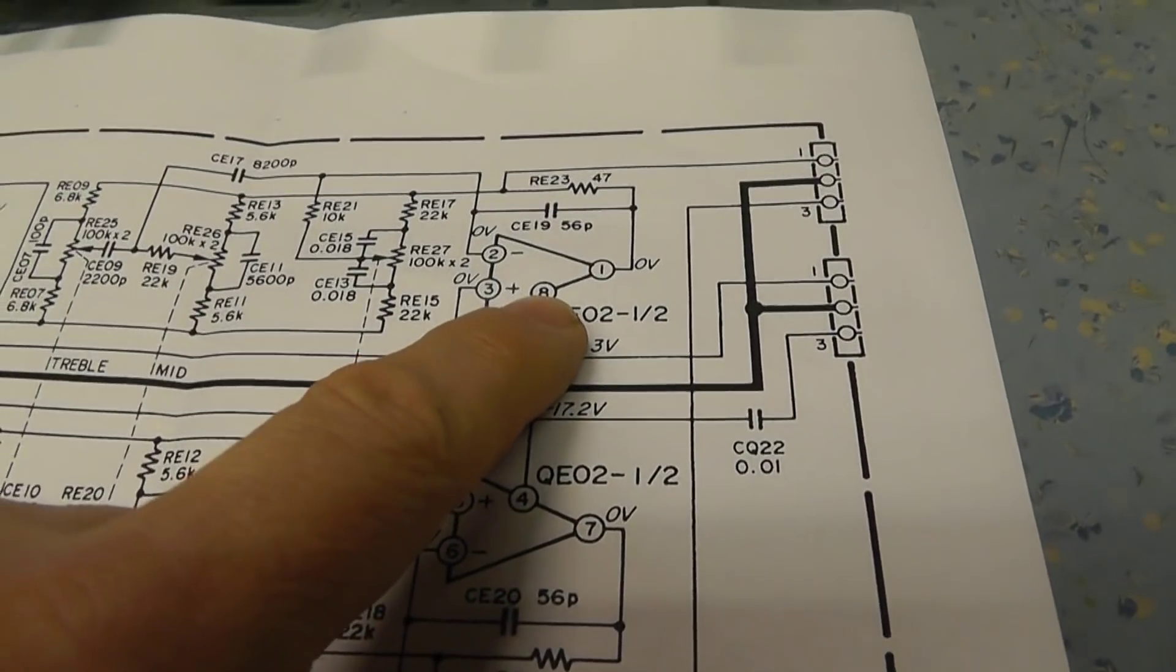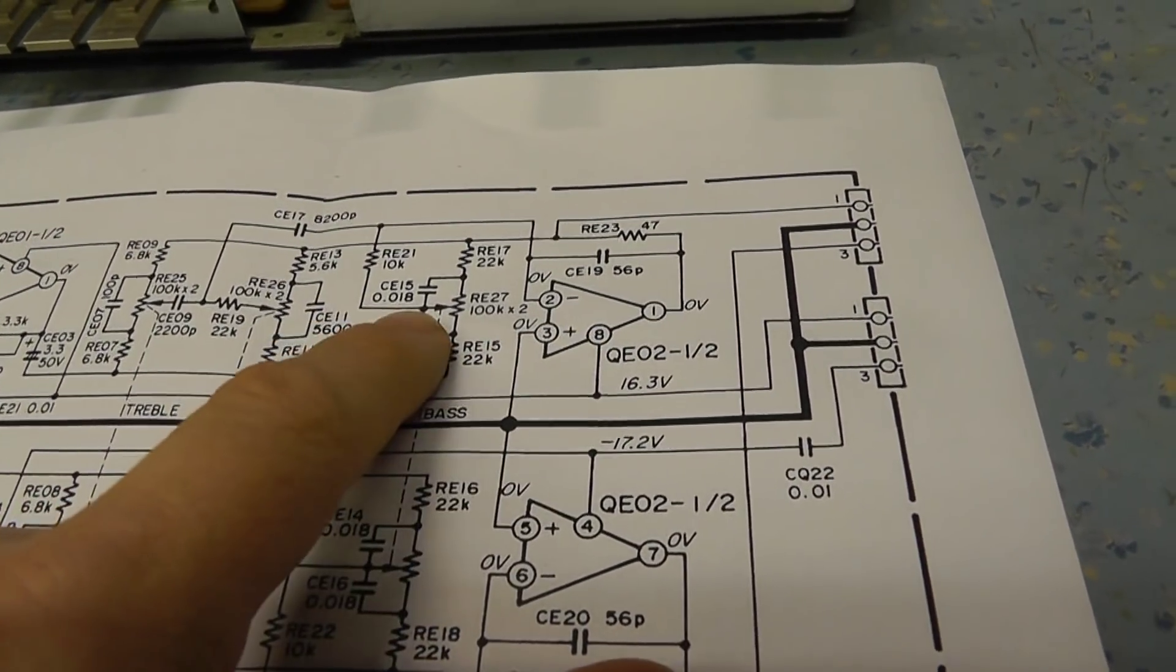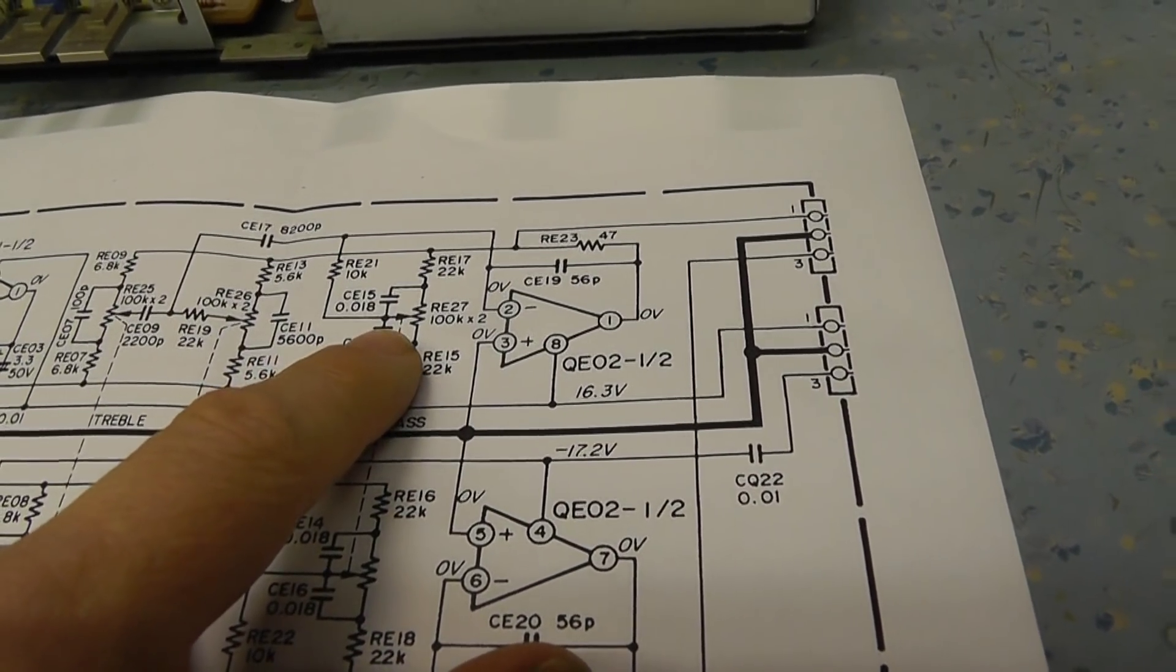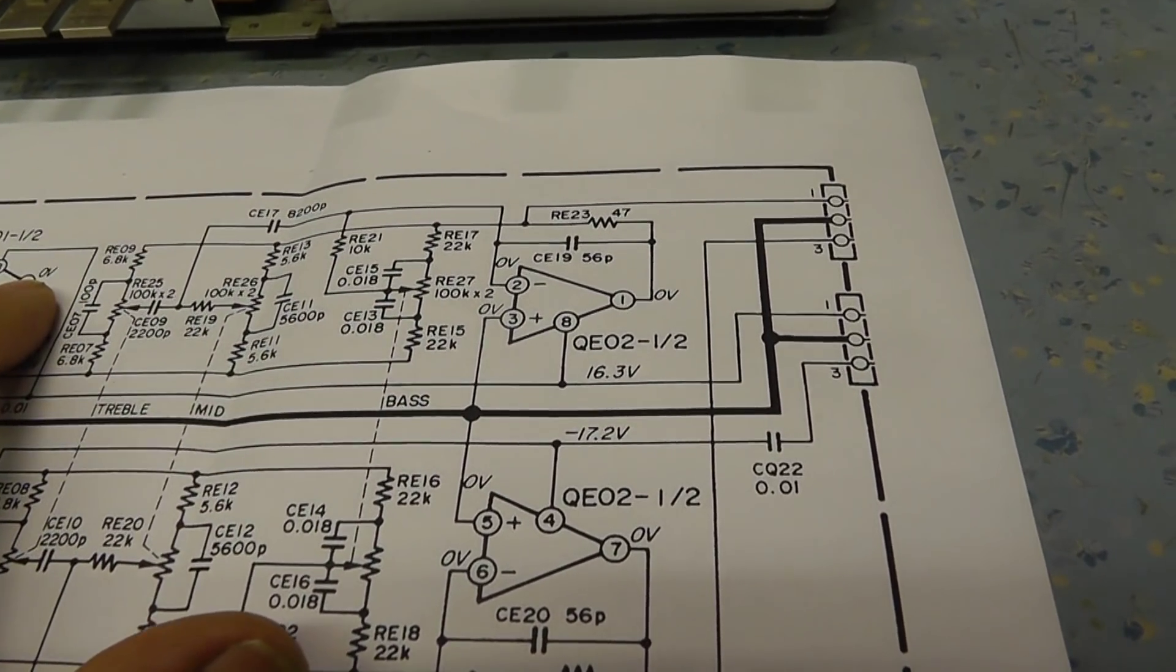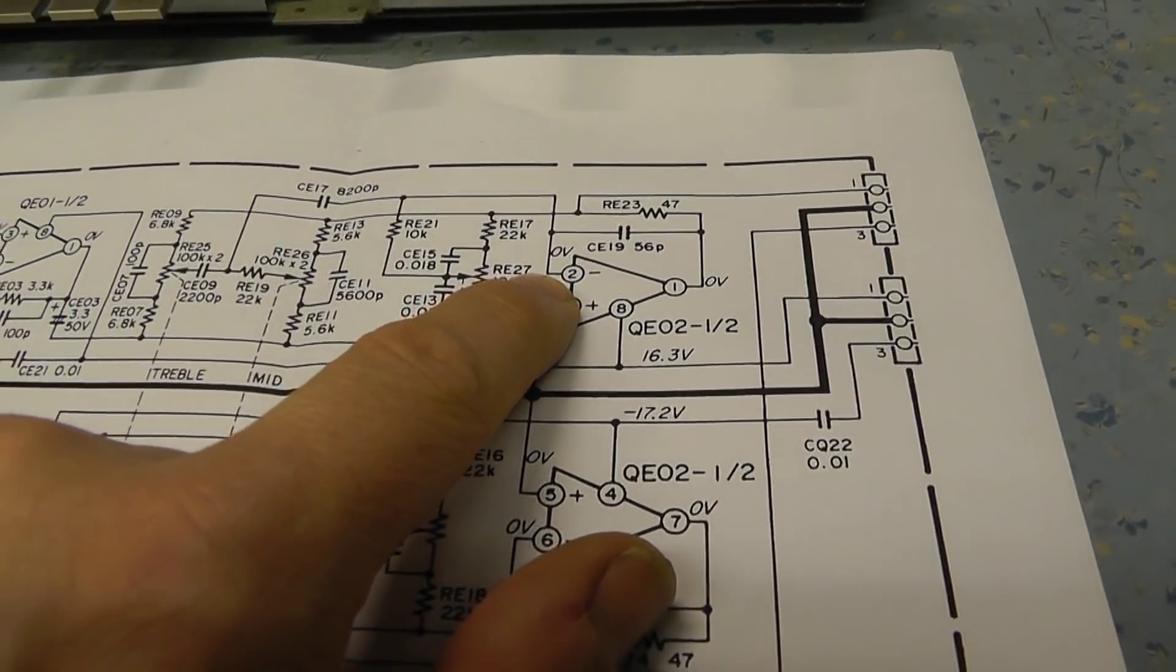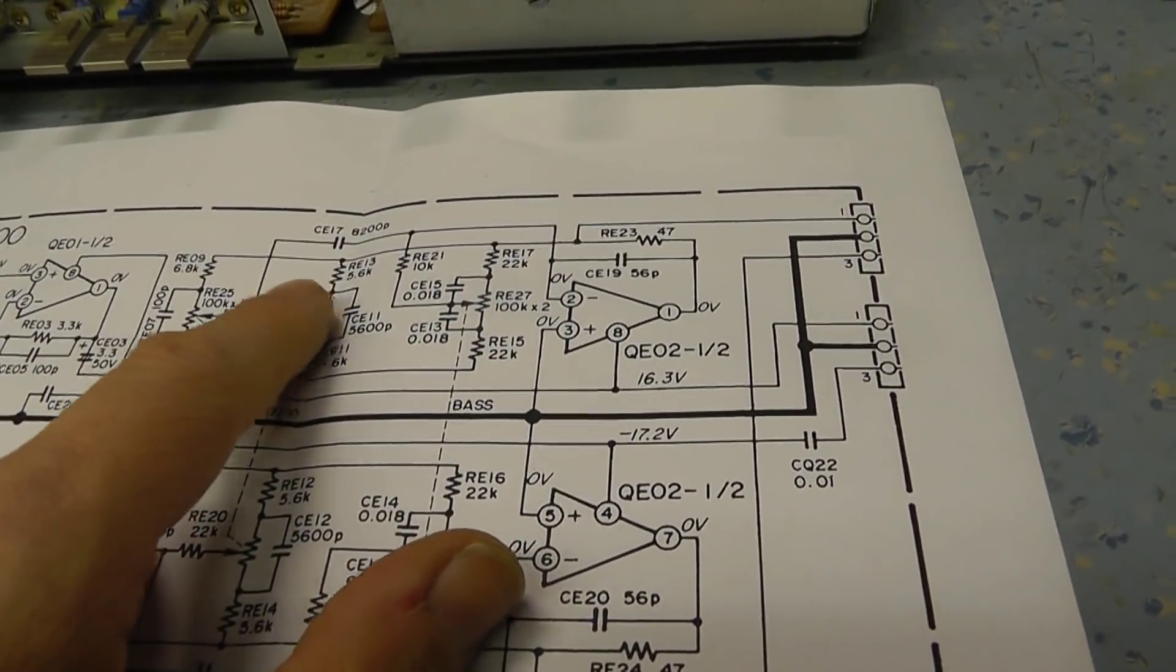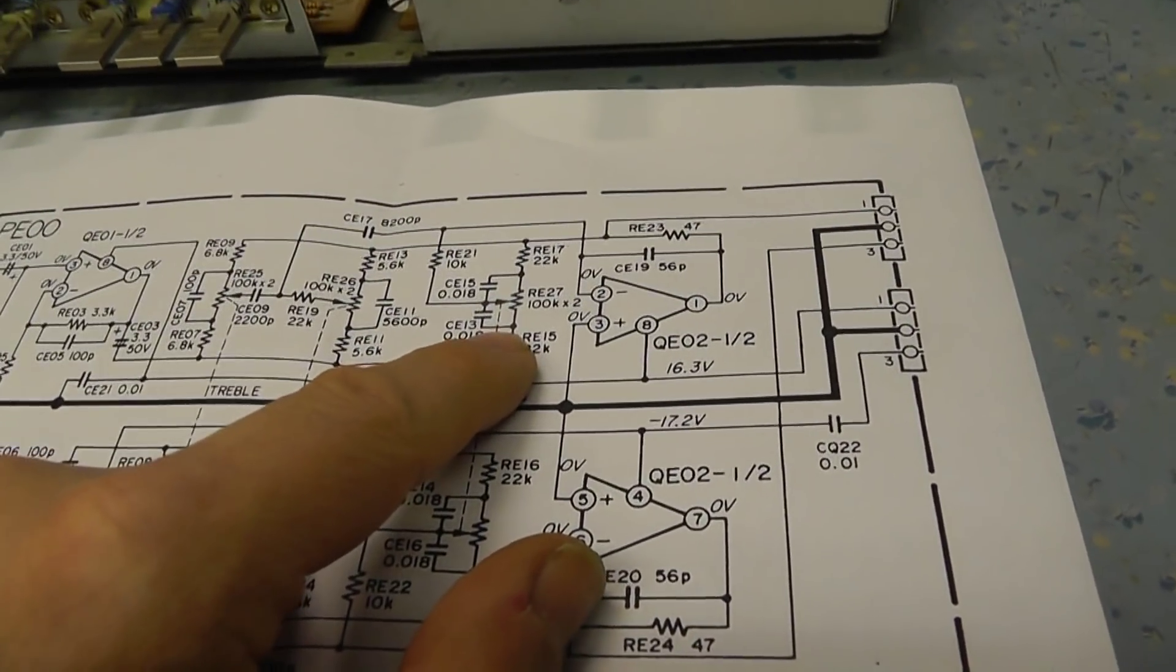Now there is a fix if we couldn't repair this tone control circuit. The other option is to basically bypass the tone control circuit altogether. What I would have done was taken the output of here and fed it straight into the input of here, and probably had to experiment with a couple of resistors to try and get the sound balanced out. But if the pots had failed totally or been damaged or broken, you could basically bypass this circuit without any problem at all.